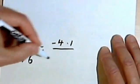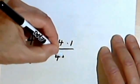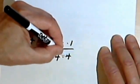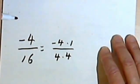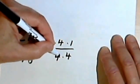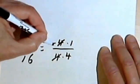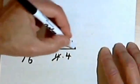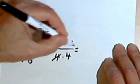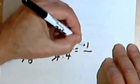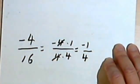My denominator I'm going to think of as 4 times 4. I can cross out this 4 and cross out this 4, but I'm not crossing out the negative. So I've still got a negative fraction. I've got negative 1 over 4.